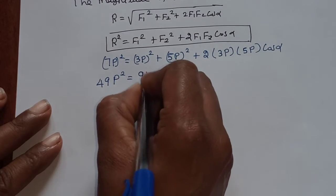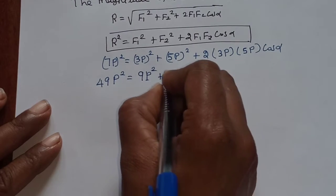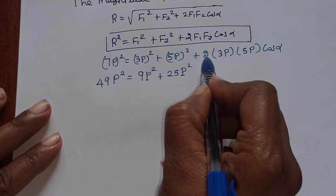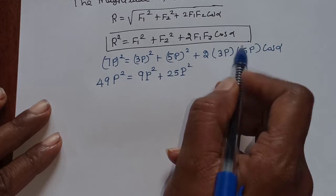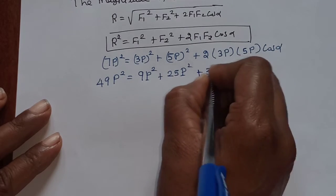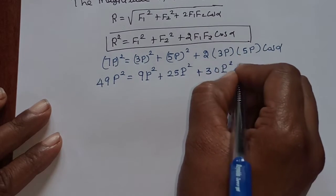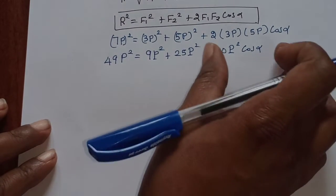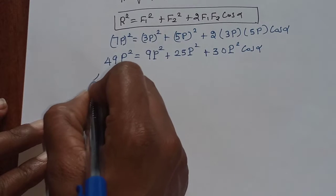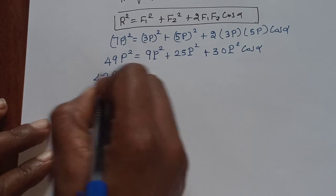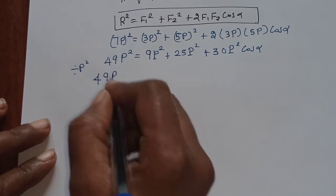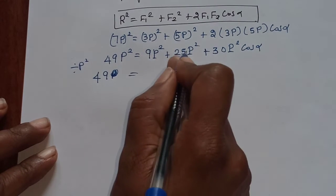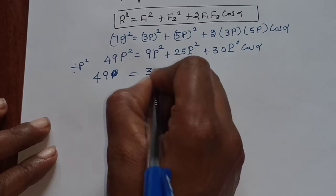So 49p squared is equal to 9p squared plus 25p squared plus 2 times 3 times 5, which is 30p squared cos(alpha). Dividing both sides by p squared, we get 49 equals 9 plus 25 plus 30 cos(alpha). That is 49 equals 34 plus 30 cos(alpha).